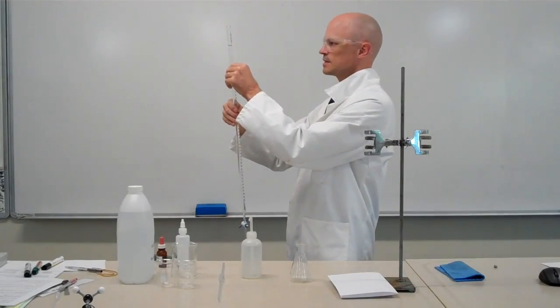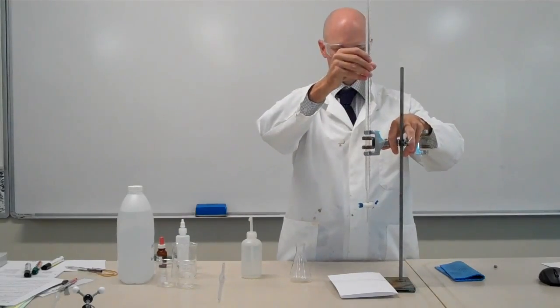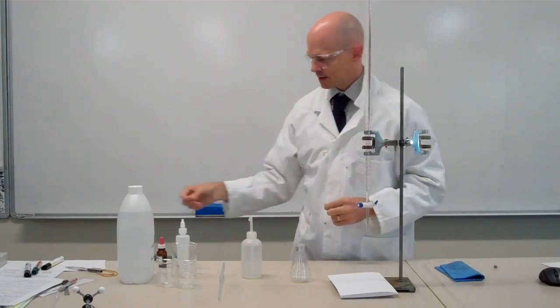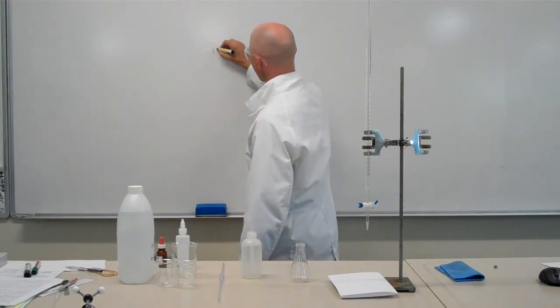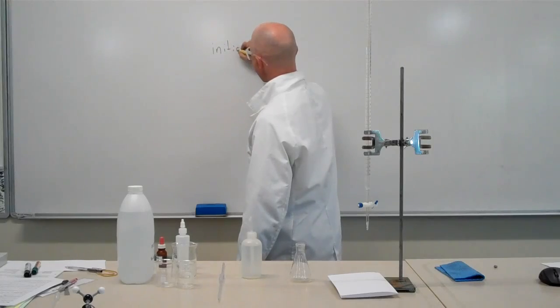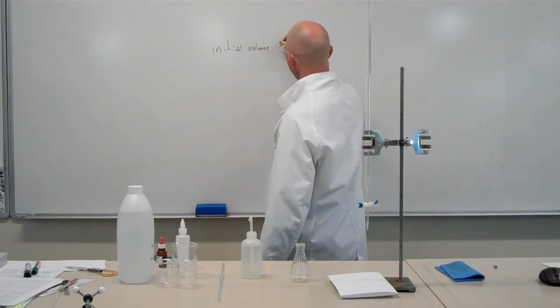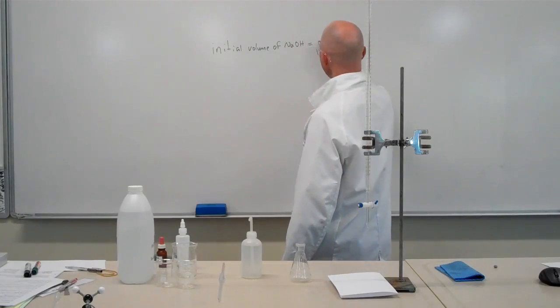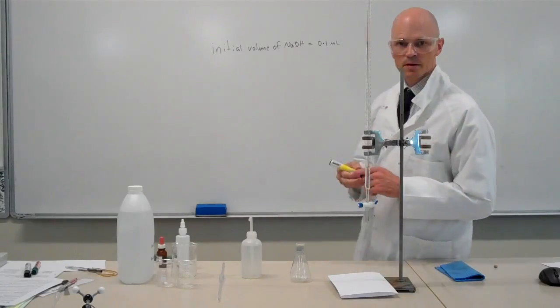I'm going to read it, read the scale here, it's 0.1 ml. I'll pop that in my burette clamp. So my initial volume is 0.1 ml.